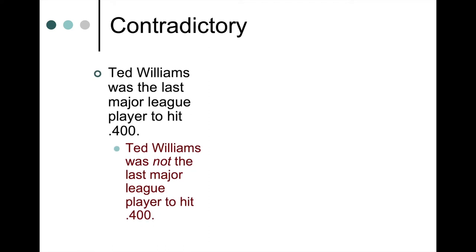For example: Ted Williams was the last major league player to hit .400. Ted Williams was not the last major league player to hit .400. These two statements are obviously incompatible — they cannot be true at the same time. But it's also true that their denials are incompatible. The denial of the first statement is the second statement, and the denial of the second statement is the first. So not only are the statements themselves incompatible, but their denials are also incompatible — and we call those contradictory statements.